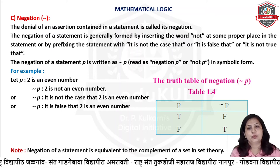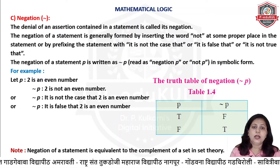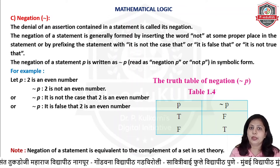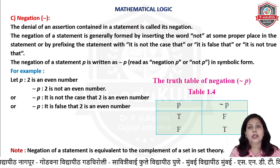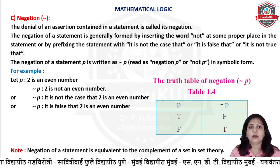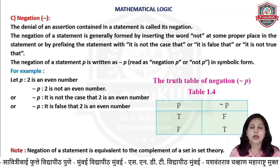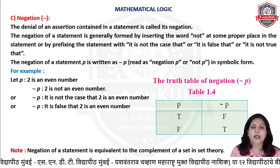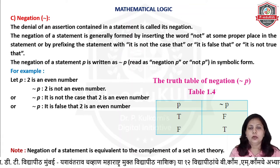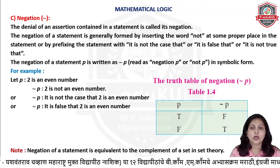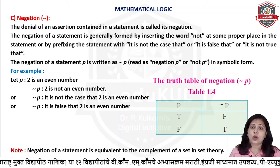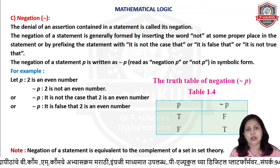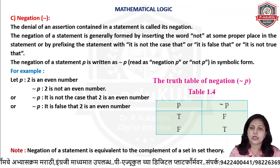We read negation of p as 'not p'. Negation and 'not' are also used in set theory in the concept of complement. Here, let p be '2 is an even number'. Its negation can be written as: '2 is not an even number', 'it is not the case that 2 is an even number', or 'it is false that 2 is an even number'. These three ways we can write the statement with negation.